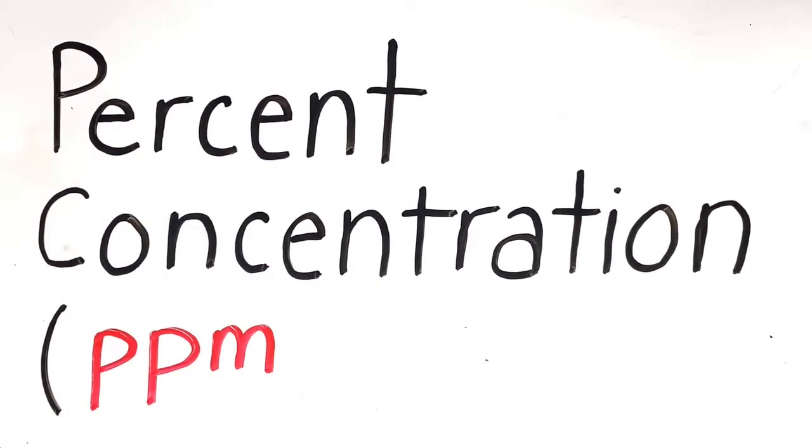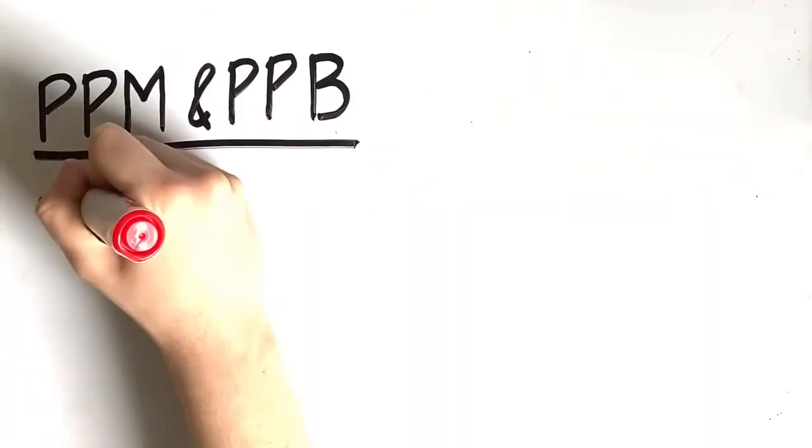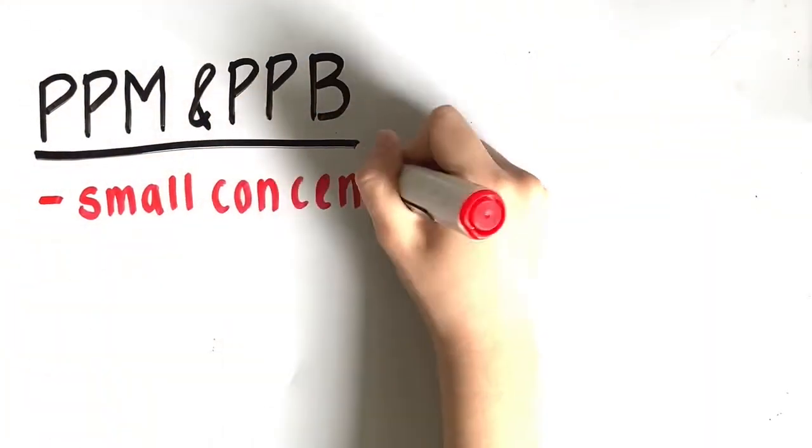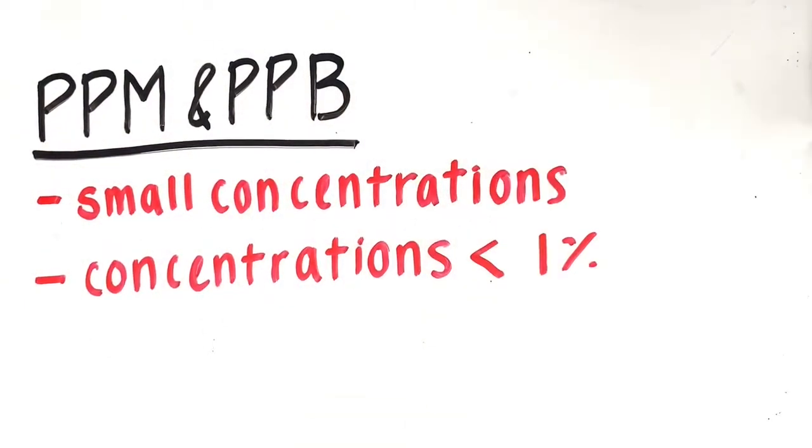What is percent concentration measured in parts per million and parts per billion? PPM and PPB are used for extremely small concentrations. These concentrations are typically less than 1%, so it is much easier to express them in parts per million or parts per billion.